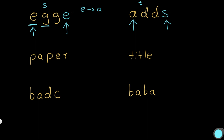We're going to create a dictionary or a hash map. Let's see how we do that with the example 'paper' and 'title'. We're first going to iterate through both strings at the same time. First we go to p in s and t in t — so we have p and t. We're going to make a mapping saying that for this to be isomorphic, all the p's in string s must be mapped to t. That's the rule we've set.